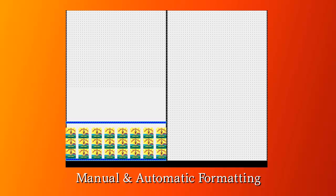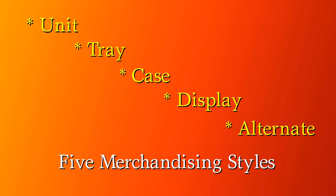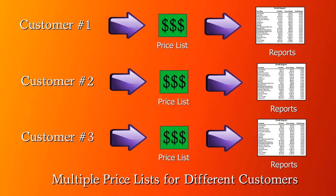You can format left, right, center, justify, and spread. There's full support for five merchandising types, each with their own dimensions, costing, images, and sales data. Multiple pricing is available — different customers can have their own cost and retail pricing.